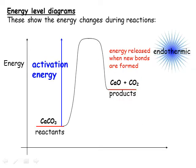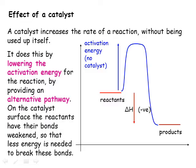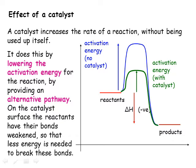We can draw a very similar energy level diagram for an endothermic reaction. The only difference is that the amount of energy we put in will be larger than the energy released when the bonds in the products are formed, so delta H for the reaction will be positive. A catalyst works by lowering the activation energy, so it takes less energy to break the bonds in the reactants. However, the overall energy change, delta H, remains exactly the same regardless of whether a catalyst is used.